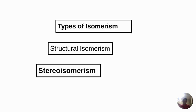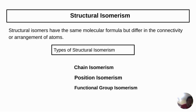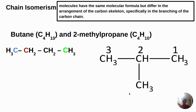Let's move on to the types. Generally we have two types of isomers: we have structural isomers and we have stereoisomers. Structural isomers are compounds with the same molecular formula but different in their connectivity or arrangements. In some books they will tell you we have five structural isomerisms, but in general sense we have only three: chain isomerism, position isomerism, and functional group isomerism. Chain isomerism involves molecules having the same molecular formula but different in the arrangement of carbon skeleton, especially in the branching of the carbon chains.